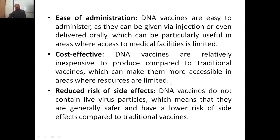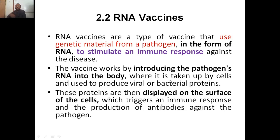RNA vaccines are a type of vaccine that use genetic material — specifically the RNA of a particular pathogen or virus — to stimulate the immune response. Just as DNA vaccines use DNA, RNA vaccines use RNA. The vaccine works by introducing the pathogen's RNA into the body, where it is taken up by cells and used to produce viral or bacterial proteins, which are then displayed on the cell surface, triggering the immune system to produce antibodies that go and kill the pathogen.